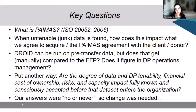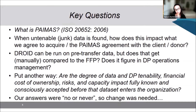But when you're assessing these details at the point of pre-transfer for a potential acquisition, what happens when junk data is found? Does this impact what we agree as an organization to acquire? Does it have consequent impact on the PAMOS agreement? We know that DROID can be run on pre-transfer data, but does that report actually get compared manually or otherwise to the file format policy? And what are the findings, and how do those impact digital preservation capacity management? Are the degree of data and digital preservation tenability, the financial costs of ownership, the risks, and the capacity impact fully known and accepted before the data enters the organization? Our answers to these questions practically were no or never, and so we knew that change was needed.